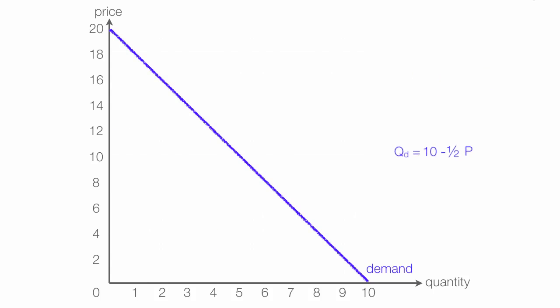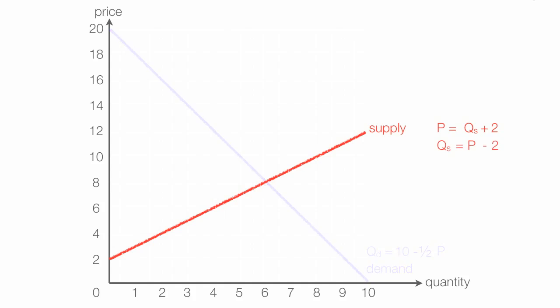So now let me draw the supply curve back in. And this one is much easier. I'm going to convert it to that form. I'm going to subtract 2 from both sides of the equation. Those two cancel out, which gives me quantity supplied equals price minus 2, which is exactly as I want it right there. Those are the same equations, of course.